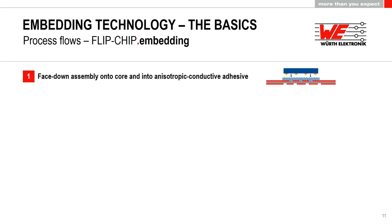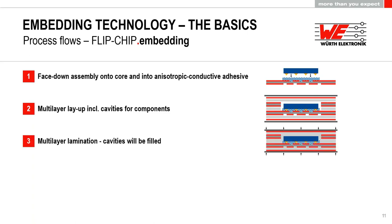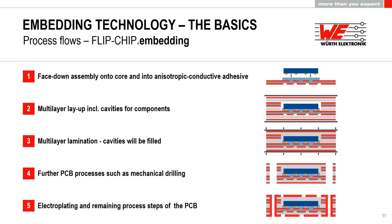For flip chip embedding, a bumped bare die is used. The ACA (anisotropic conductive adhesive) is printed onto an inner layer core, and the component is pressed onto the core pads using a thermal compression process. The adhesive hardens instantly, providing both electrical and mechanical fixation. The remaining steps follow the same pattern: cavity creation, lamination with resin flowing around the component, then standard PCB processes such as mechanical drilling, outer layer structuring, and solder resist.